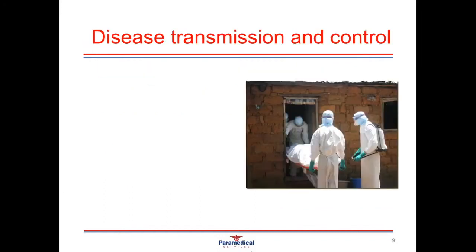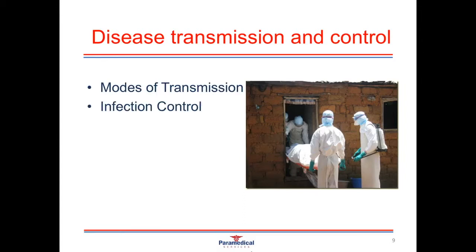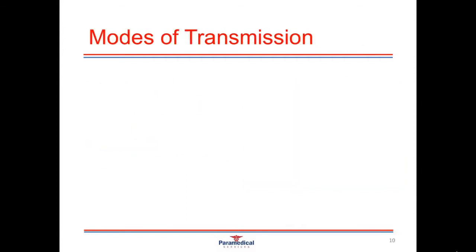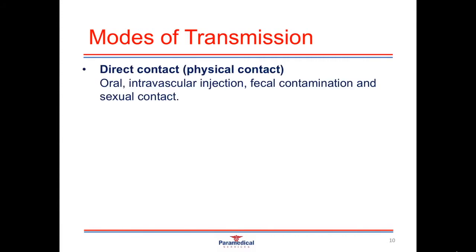In this next section we'll look at disease transmission and control — the different modes of transmission, the chain of infection, infection control methods, personal protective equipment, disposal of contaminated waste, and managing needle stick injuries. For a pathogen to spread from one person to another, it needs a mode of transmission. The first type is through direct or physical contact — one of the easiest ways for a pathogen to enter the body, bypassing many natural defenses. Examples include oral contact, contact through the eye, intravascular injections, fecal contamination, and sexual contact.